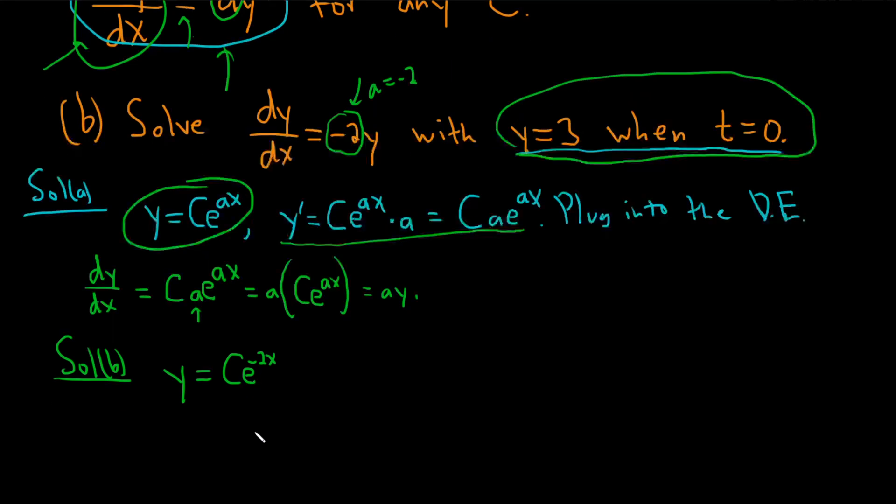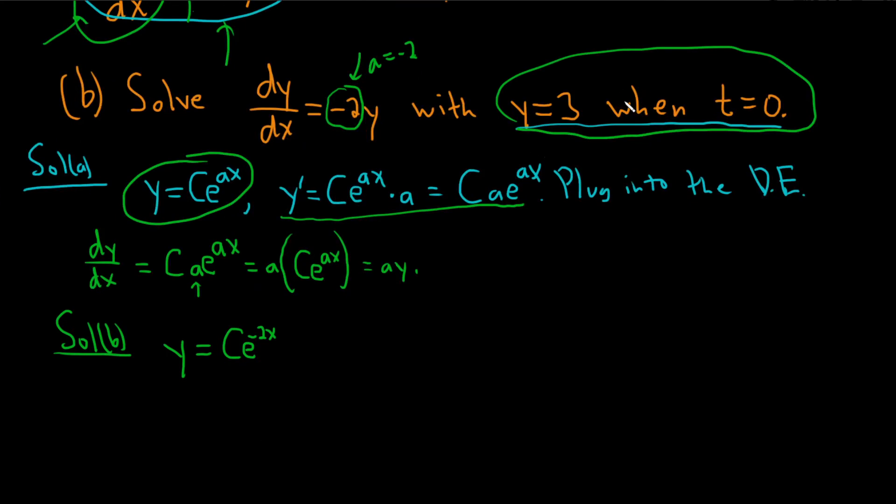So now we have to use this, which is called an initial condition, to find the value of c. It says y equals 3 when x equals 0. I typoed when x equals 0. It's a little mistake there. So in this case, we have 3 equals ce to the 0. So e to the 0 is 1. So you get 3 equals c. So c equals 3. So the final answer would be y equals 3 e to the negative 2x. And that would be the final answer.